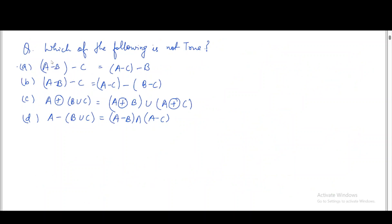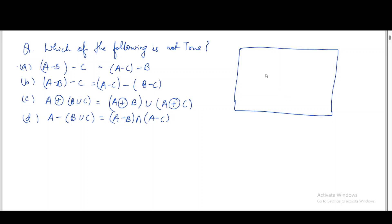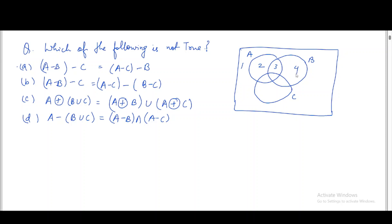Let us see another problem. Which of the following is not true? All options involve sets A, B, and C, so we draw a three-circle Venn diagram. Label the circles A, B, and C, and assign elements: 1 is only in A, 2 in A only, 3 in A∩B, 4 in B only, 5 in A∩C, 6 in A∩B∩C, 7 in B∩C, and 8 only in C.